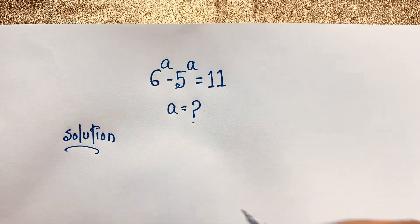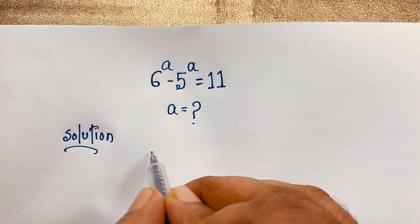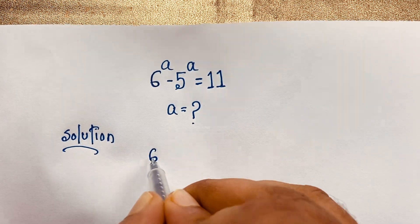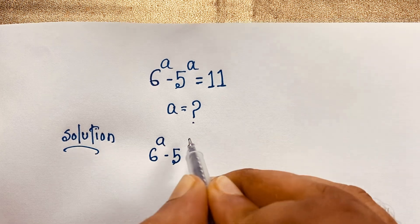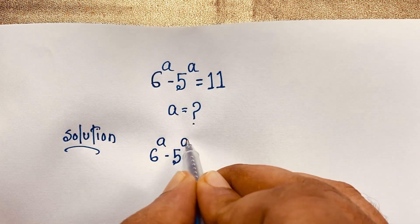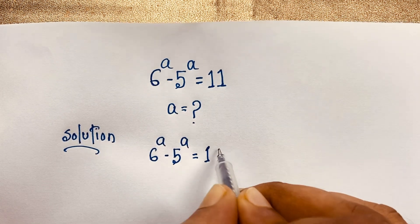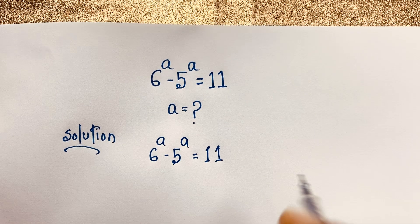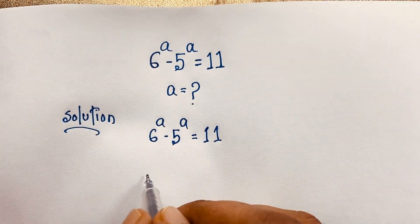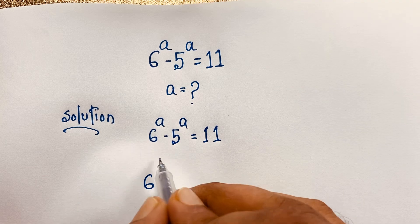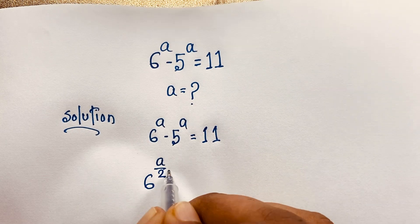I will solve this question step by step. Our question is: 6 to the power a minus 5 to the power a is equal to 11. Now, here I take 6 to the power a and divide the exponent by 2.